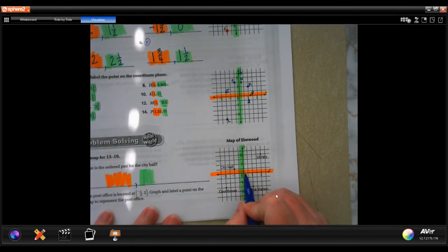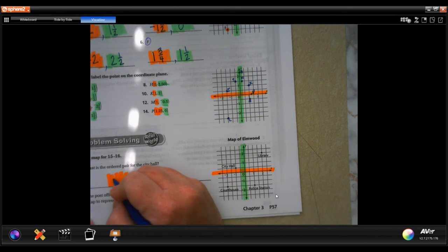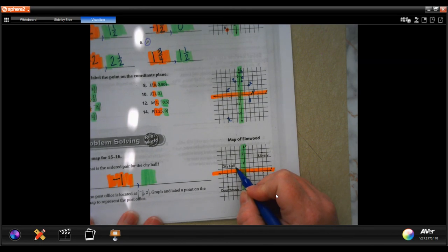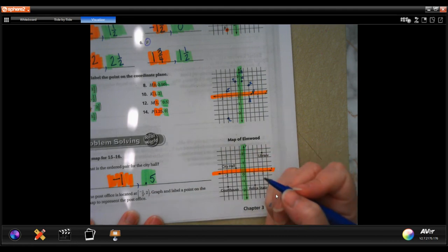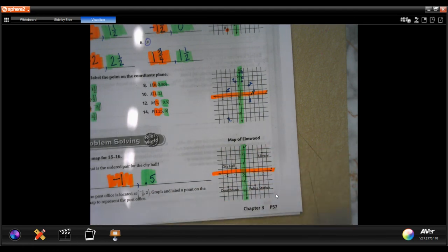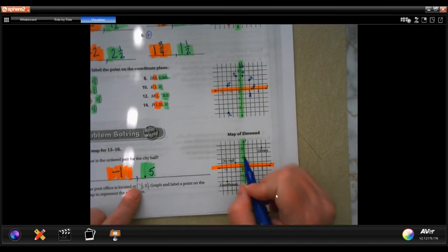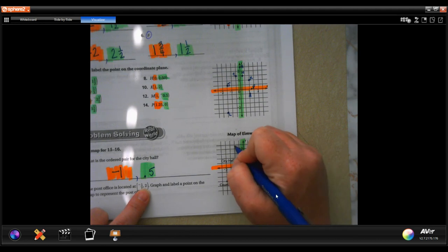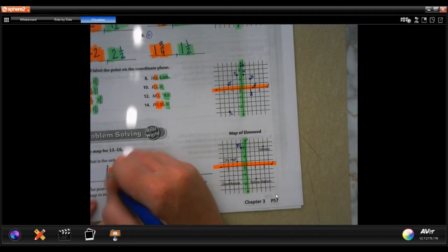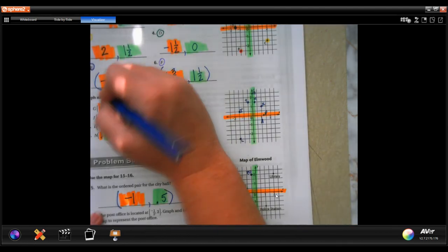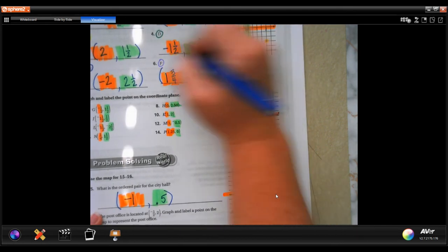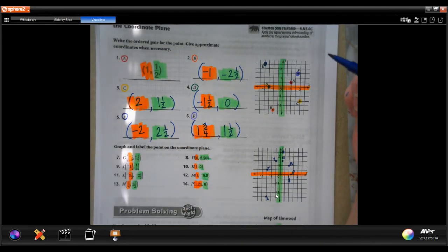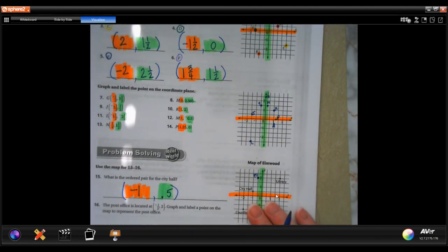What is the ordered pair for City Hall? Well, City Hall goes over negative one and it goes up one half or 0.5. You can do one half or 0.5, either one is totally acceptable. The post office is located at negative one half, so negative one half up to. We'll label post office. When you do these, you need to put them in parentheses. I forgot to tell you that. My bad. So all of your ordered pairs, that's what these are called, are in parentheses. See how they already have parentheses? Number one's already got parentheses for you. You got to put them in parentheses.